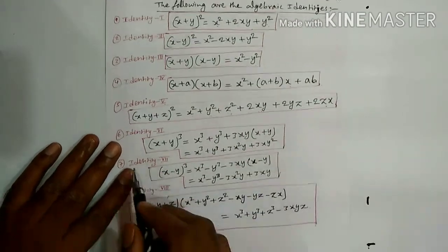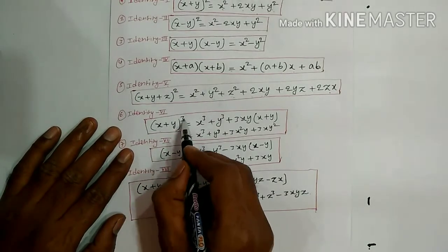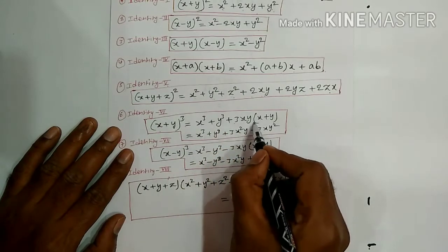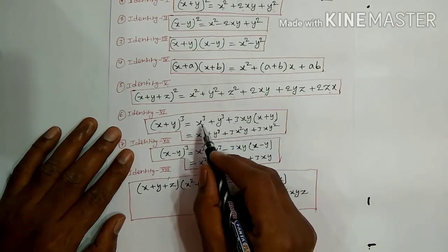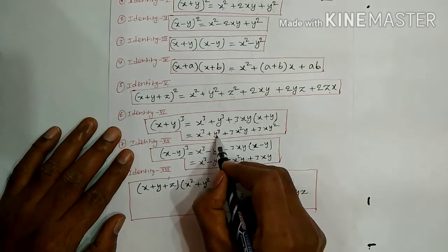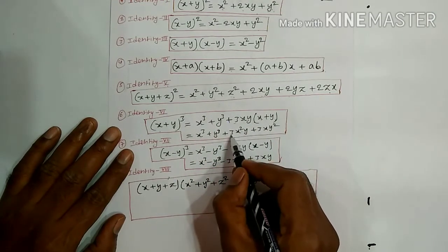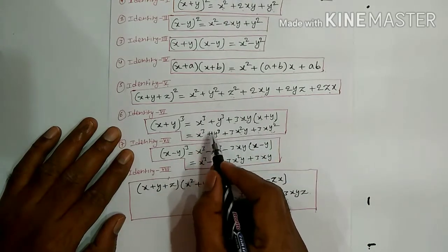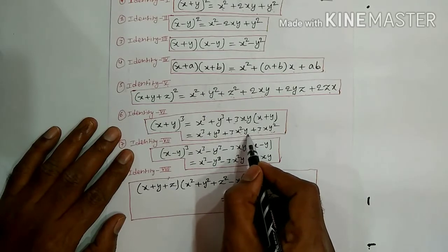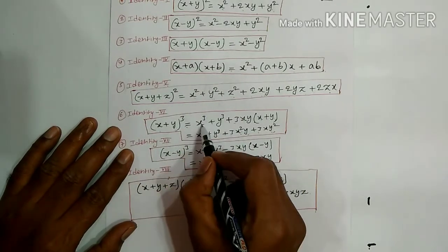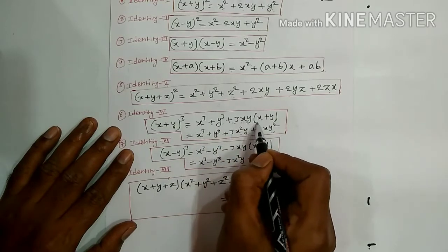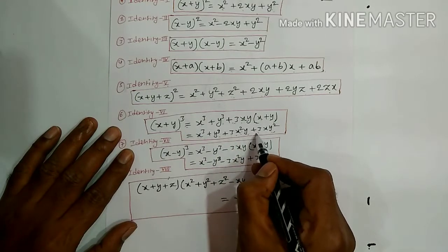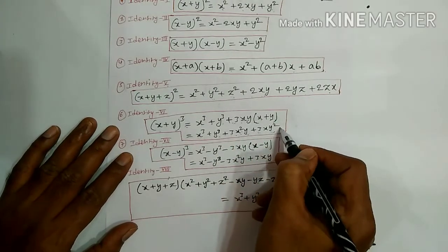Identity 6: X plus Y whole cube. This is equal to X cube plus Y cube plus 3XY into X plus Y. If you expand: 3XY times X gives 3X square Y, and 3XY times Y gives 3XY square. So X plus Y whole cube equals X cube plus Y cube plus 3XY(X plus Y), or equivalently X cube plus Y cube plus 3X square Y plus 3XY square.